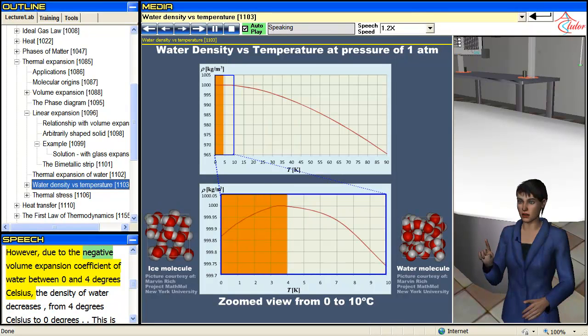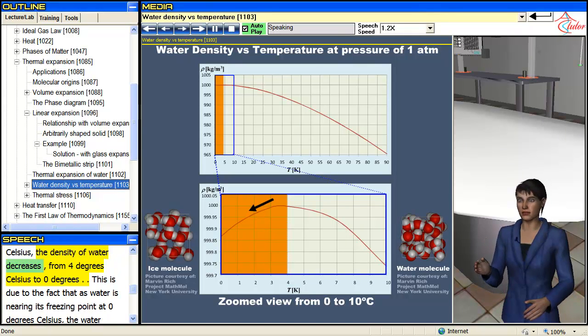However, due to the negative volume expansion coefficient of water between 0 and 4 degrees Celsius, the density of water decreases from 4 degrees Celsius to 0 degrees.